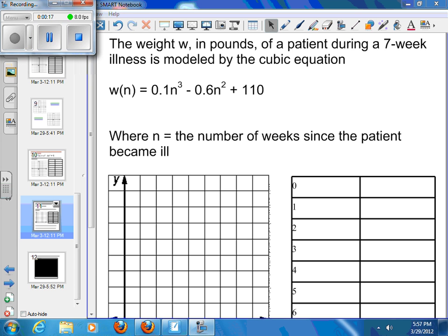So we've got a function here, W of N. And this is the weight W in pounds of a patient during a seven-week illness. And N is the number of weeks since the patient became ill.